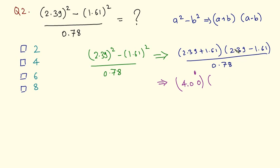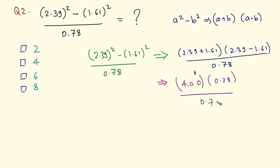And 2.39 minus 1.61: 9 minus 1 is 8, but carrying gives us 0.78. So 0.78 divided by 0.78 gets cancelled out, and the answer is 4.00 — option B is the correct answer.